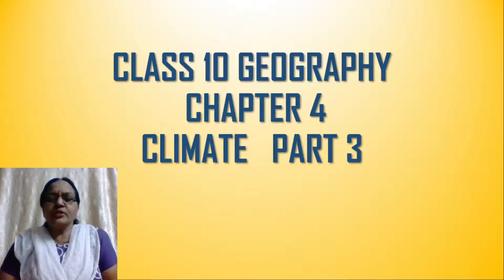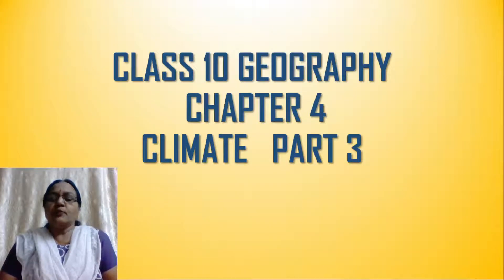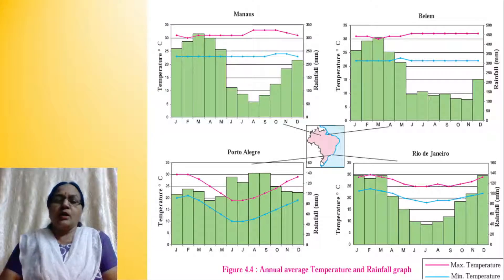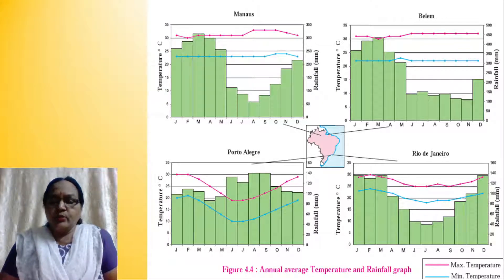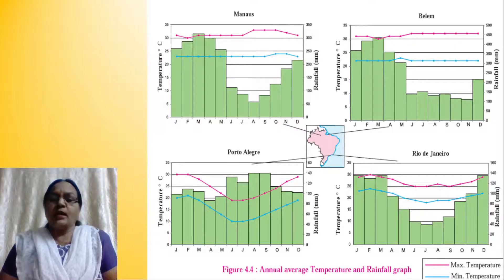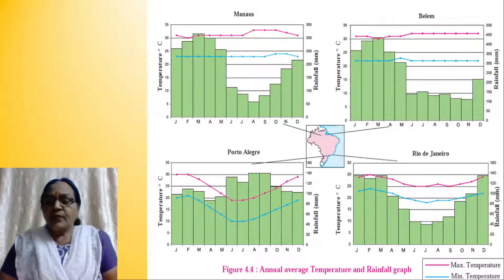Good morning children. Let's continue with the fourth chapter in geography, this climate. Now here we are going to study the average temperature and rainfall graph of both Brazil as well as India.